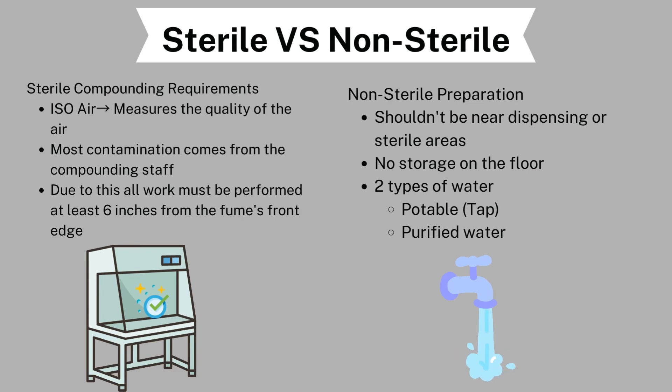The two divisions of compounding are sterile versus non-sterile. For sterile compounding requirements, we have the ISO air classification, which measures the quality of the air. Most contaminants come from the staff working at the compounding pharmacy, so we want to make sure staff understands the rules and regulations for sterile products. When working, all workers must be at least six inches from the fume hood's front edge. Non-sterile preparations should not be near the sterile areas, and when preparing them, we have two types of water: tap water and purified water.